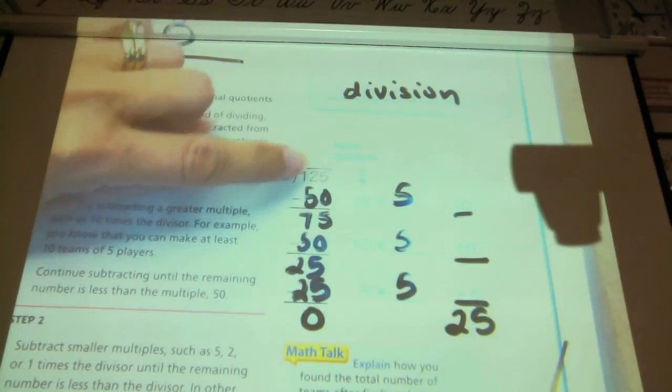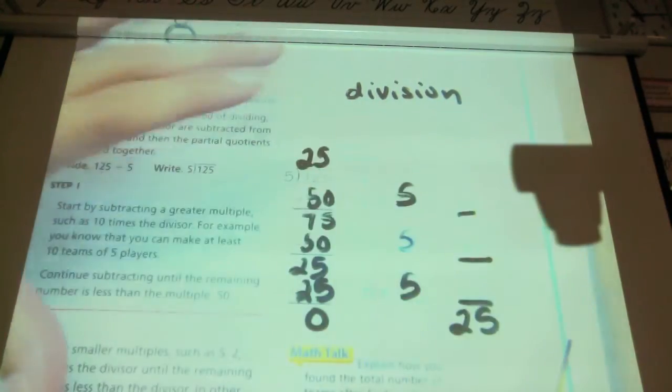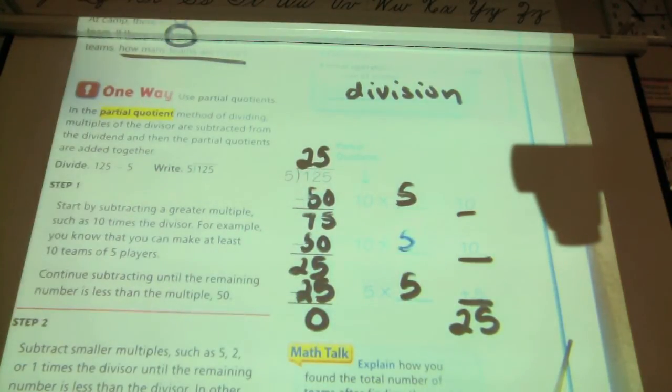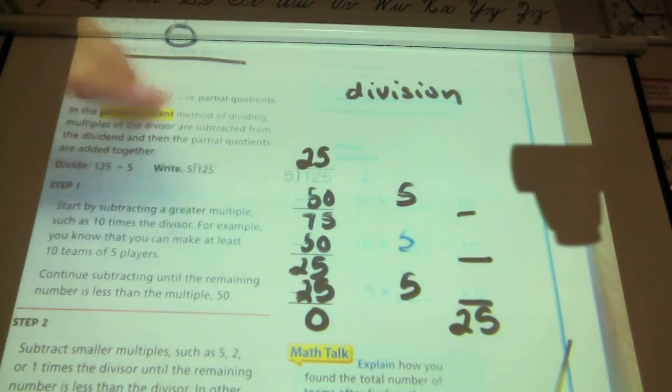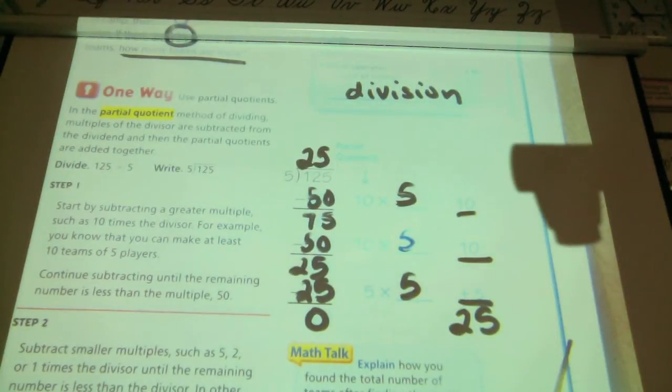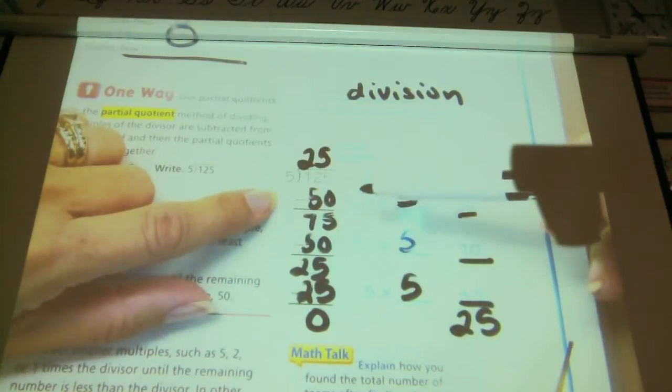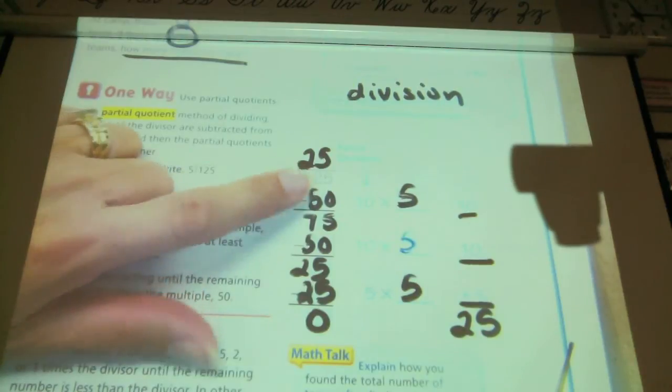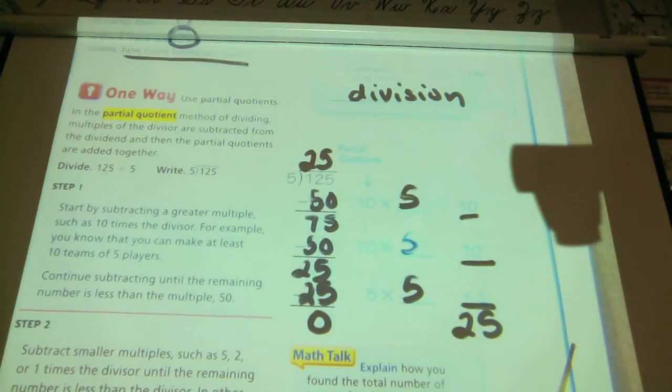So 125 divided by 5 equals 25. Now I know in third grade you guys learned an algorithm where you say 1 divided by 5, I can't do that, now I have to go to 12 divided by 5, oh that's 2. How many of this sounds familiar to you? This is less confusing. If you think about what it's asking you to do, you don't have to memorize a method.